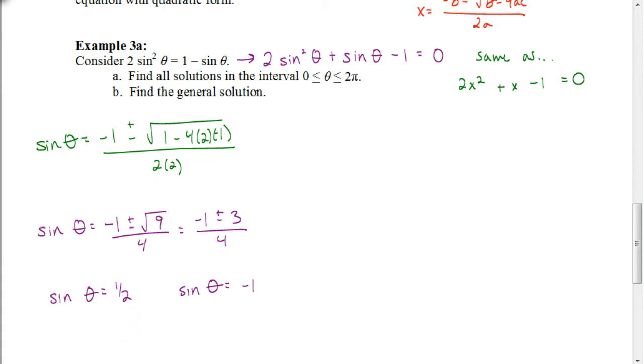So the inverse sine in degrees for this would be 30 degrees. But if I'm going to change that to radians, I'm going to multiply that by pi over 180. When that reduces to pi over 6. So I would say that one of my solutions for theta is pi over 6.